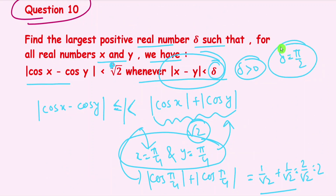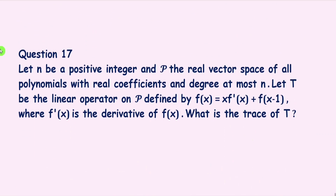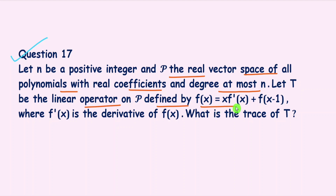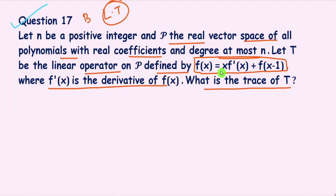Now we go to question number 17. The question says: let n be a positive integer, and let P be the real vector space of all polynomials with real coefficients and degrees at most n. Let T be a linear operator on P defined by T(f(x)) = x·f'(x) minus f(x−1), where f'(x) is the derivative of f(x). Then what is the trace of T? This is from linear transformation.